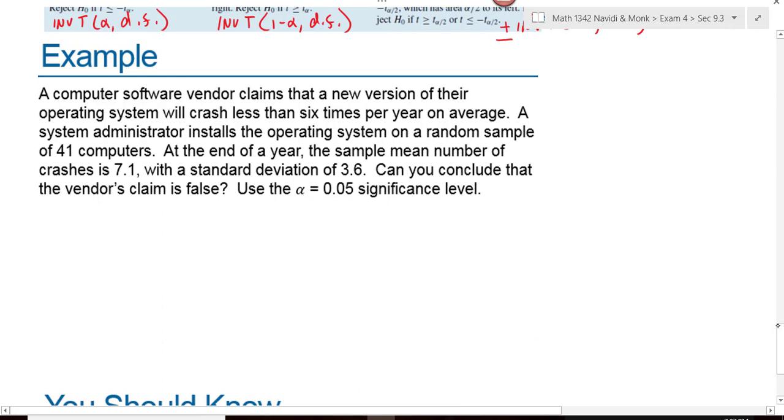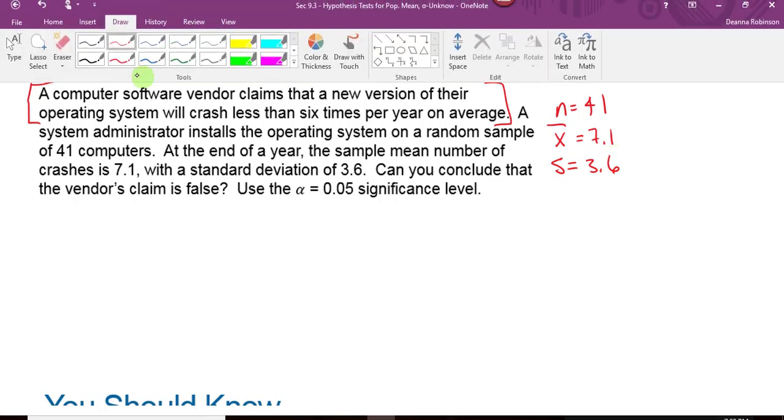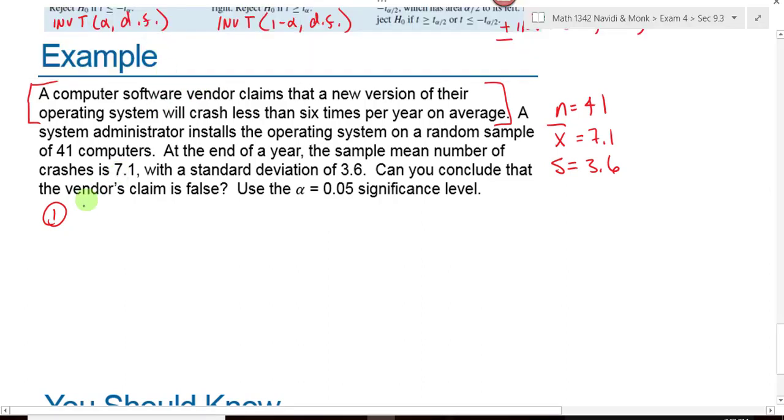Here's another problem. A computer software vendor claims that a new version of their operating system will crash less than six times per year on average. So here's their claim. Crashes less than six times per year on average. A system administrator installs the operating system on a random sample of 41 computers. n is equal to 41. At the end of the year, the sample mean of crashes is 7.1, with a standard deviation of 3.6. Can we conclude that the vendor's claim is false? Use alpha equals 0.05. We start by writing our null and our alternative hypothesis. What is my null hypothesis going to be? Look at the claim. Mu equals 6. And my alternative, mu is less than 6.